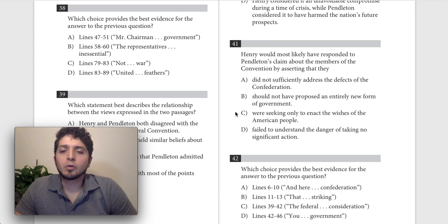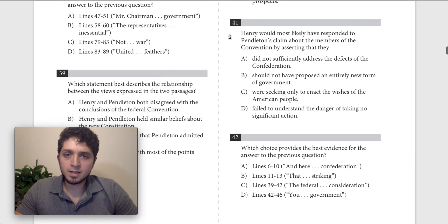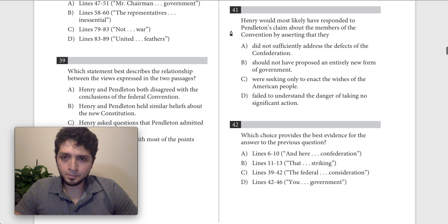So today we're going to be looking at questions 41 and 42 from SAT number 9. This is from April 2017 and question 41 says Henry would most likely have responded to Pendleton's claim about the members of the convention by asserting that they did something.